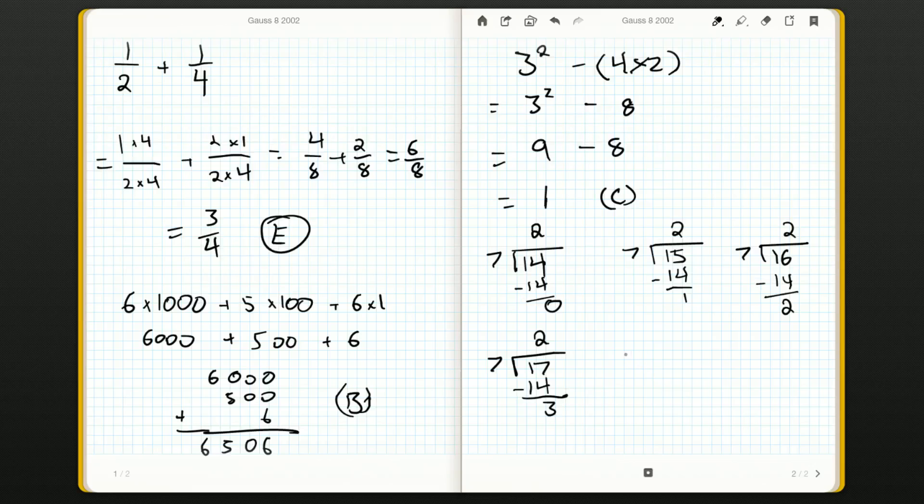So by process of elimination, 18 should be our answer. But let's just double check. Seven goes into 18. Again, it's just twice: 14. And then when we do the subtraction, we get the remainder of four that we want.